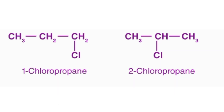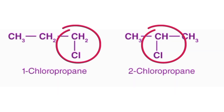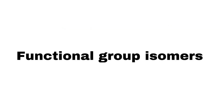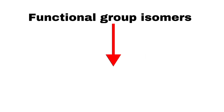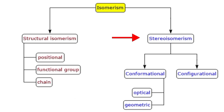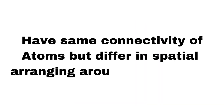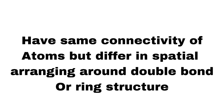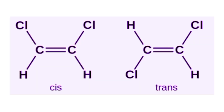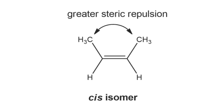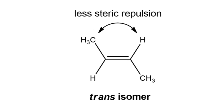Position isomers differ in the position of a functional group on the carbon chain, and functional group isomers differ in the type of functional group present. Geometric isomers are a type of stereoisomerism where the isomers have the same connectivity of atoms but differ in the spatial arrangement around a double bond or a ring structure. This is also called cis-trans isomerism, occurring when two substituents are on the same side (cis-isomer) or on opposite sides (trans-isomer).